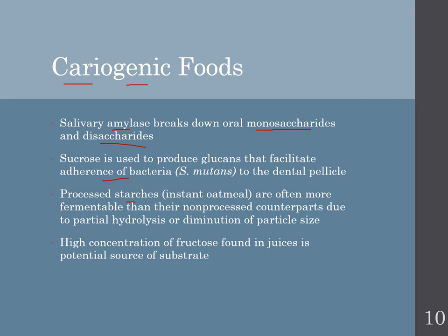Processed starches are also cariogenic. A polysaccharide wouldn't normally cause a cavity, but if we over-process it — like instant oatmeal or wheat flour in breads — because they've been broken down through processing, they are simpler and will begin breaking down in the mouth through partial hydrolysis. Any smaller size in the sugar means it's easier and faster to break down, contributing to caries. The main takeaway: the simpler the sugar, the more cariogenic it is — the more cavity-causing it will be.